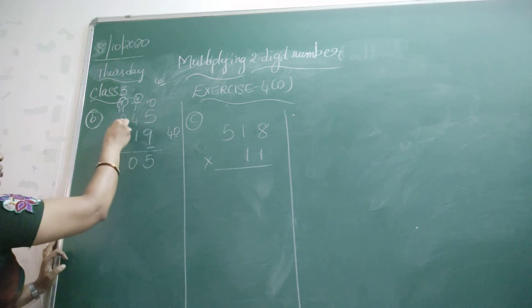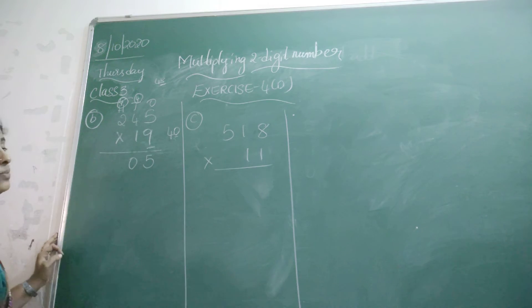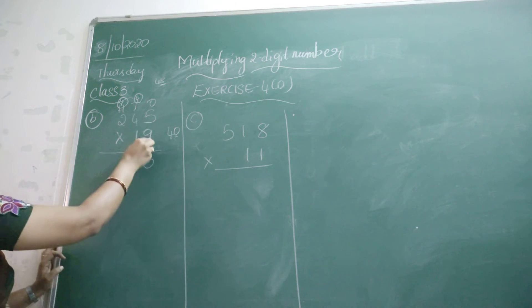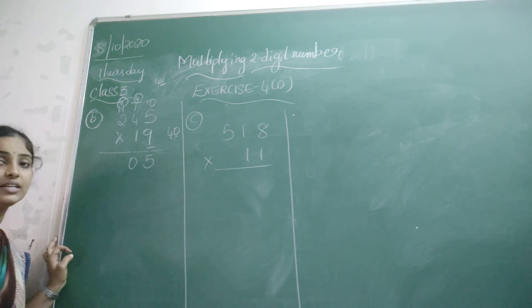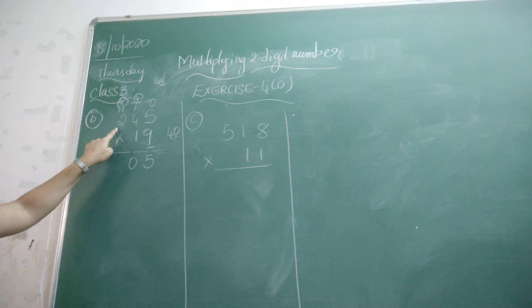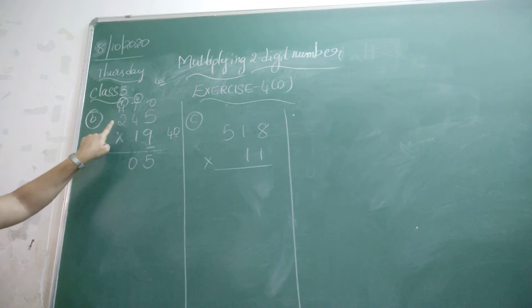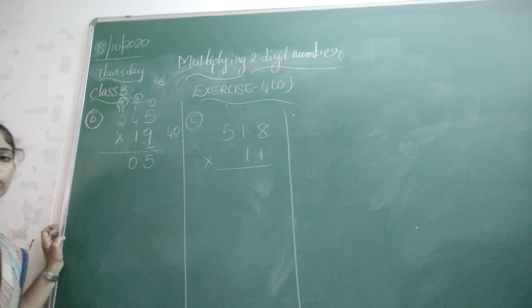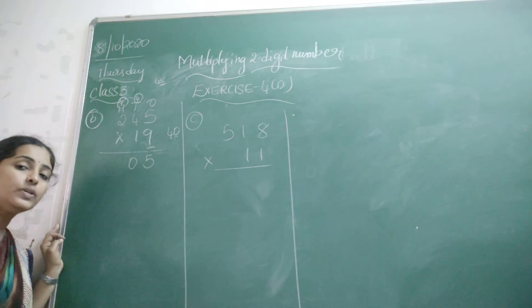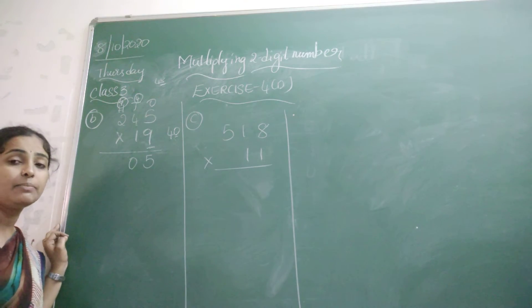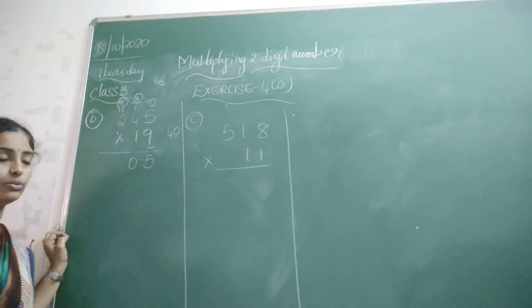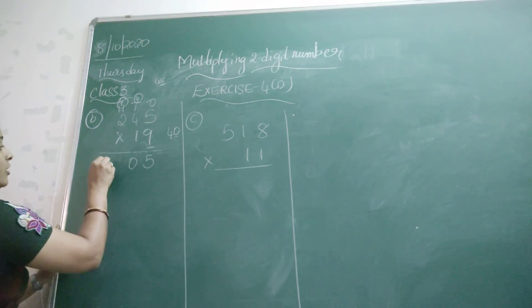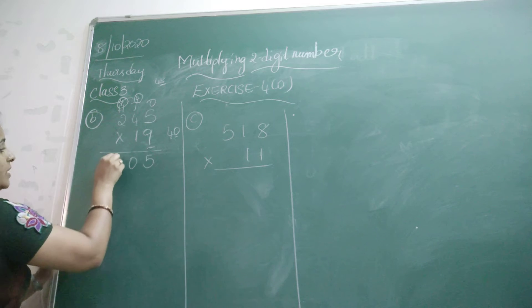Now continue the multiplication. 9 × 2 — how much are you getting? 9 × 2 is 18. How much are you getting? 18 plus 4 carry is 22. Now write down 22.